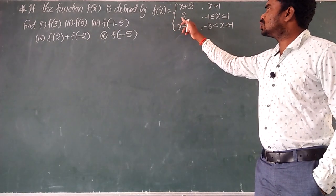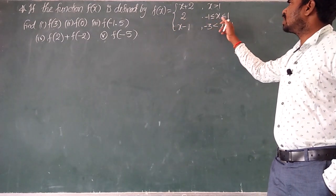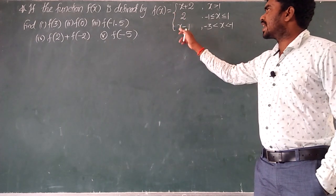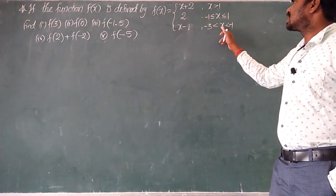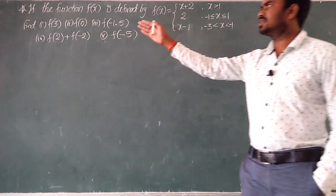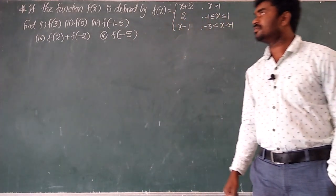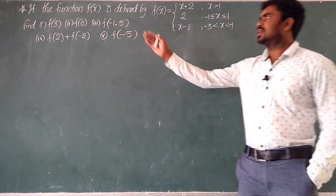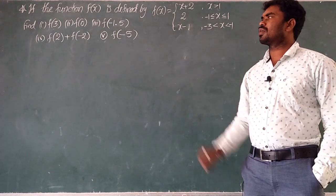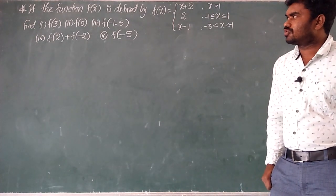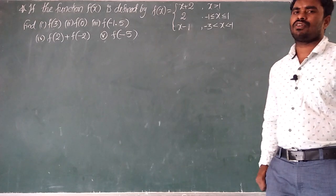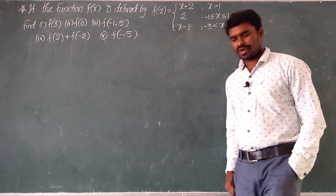f of x equals 2 when minus 1 less than or equal to x less than or equal to 1. f of x equals x minus 1 when minus 3 less than x less than minus 1. Then find f of 3, f of 0, f of minus 1.5, f of 2 plus f of minus 2, and f of minus 5.